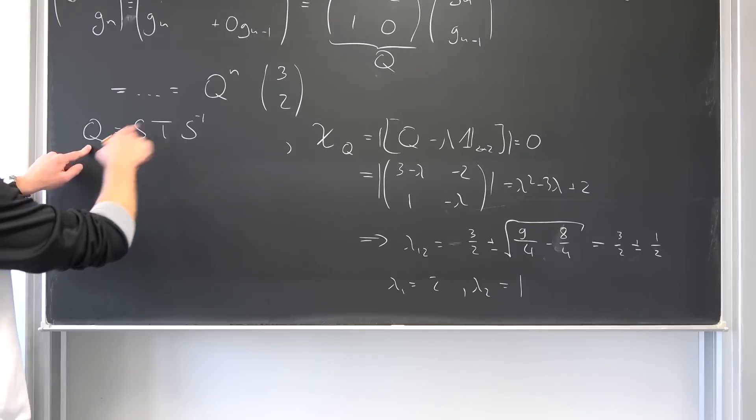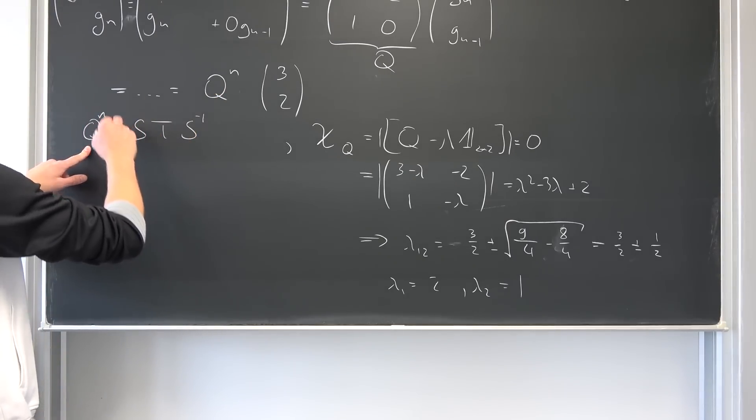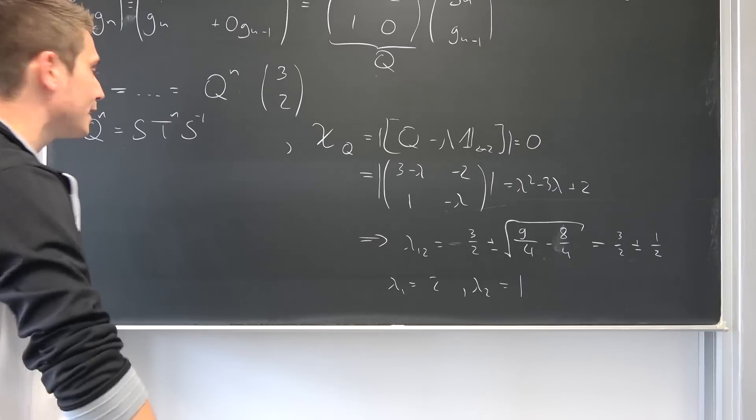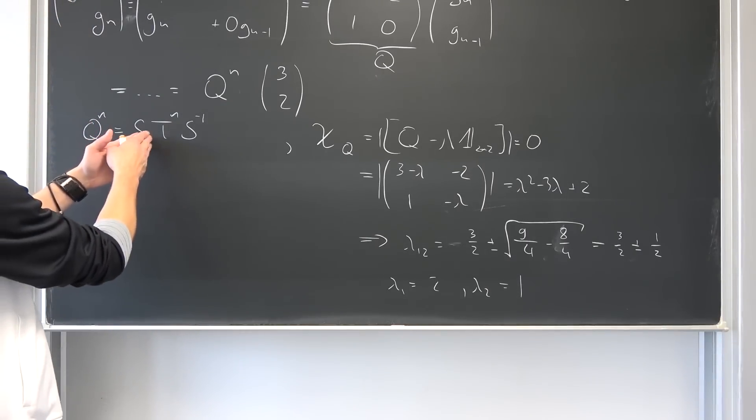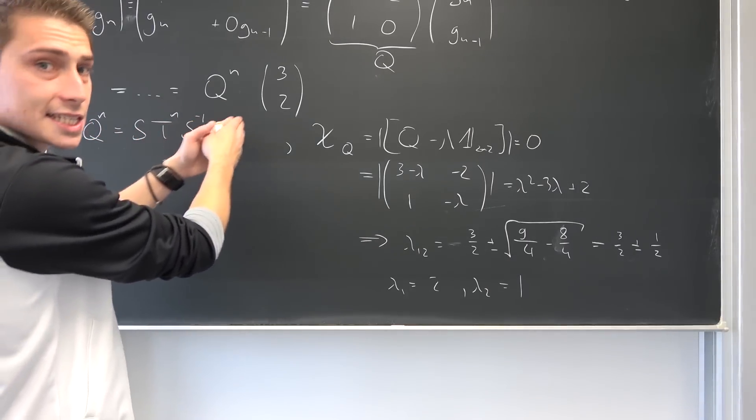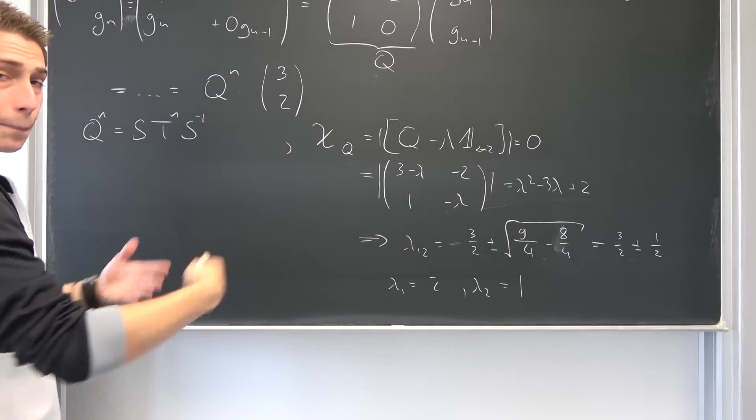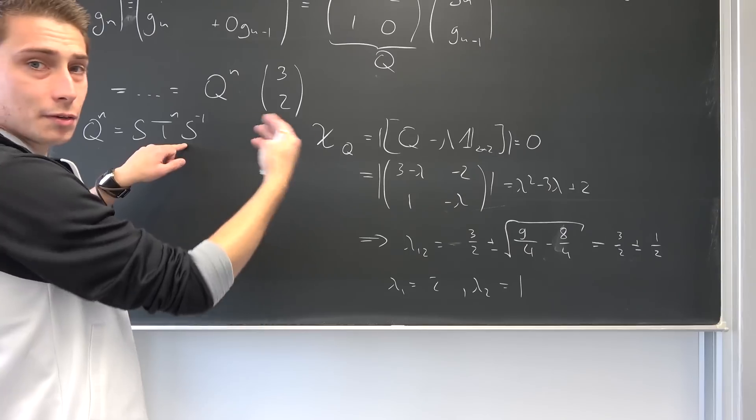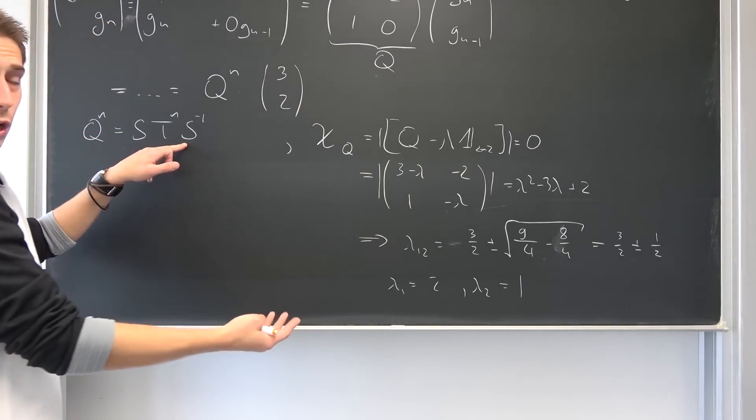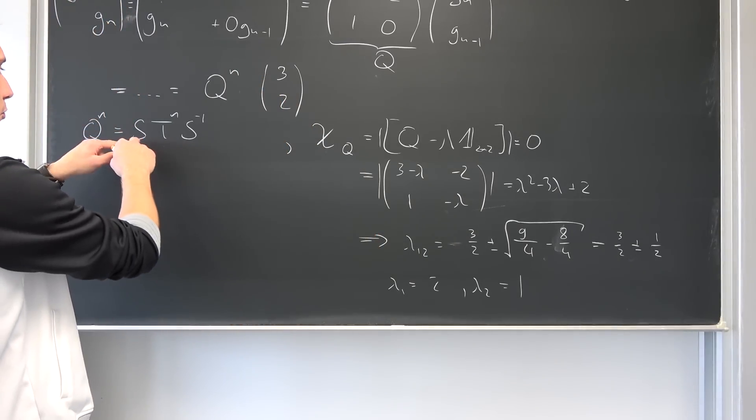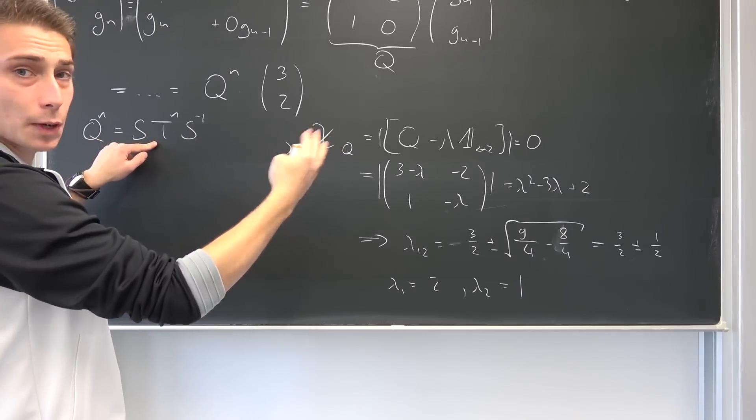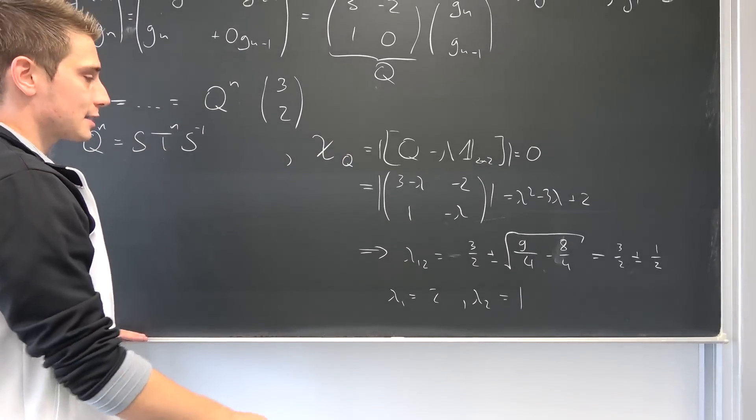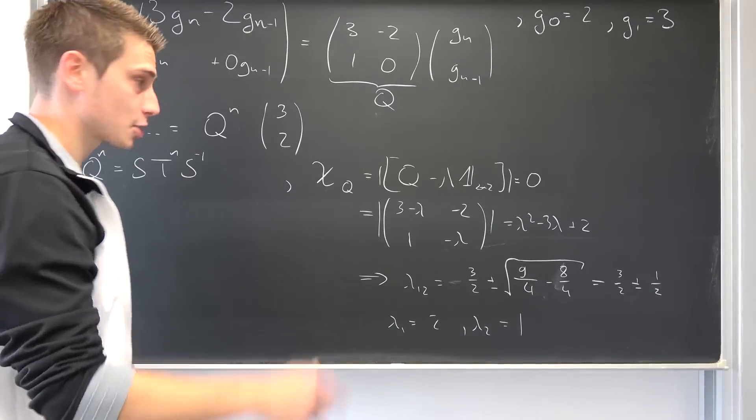If we want to find out Q to the nth power, this is what we want to have. This is the same as S times T to the nth power times S minus 1. This simply stems from the fact that this is S times T times S to the negative 1 times S times T times S to the negative 1, blah blah blah, n times exactly. S and S minus 1 multiplied together are going to end up being just the identity. So we are going to have S times T times T times T, n times, so S times T to the nth power times S inverse. This is just how it is.